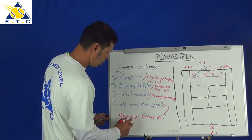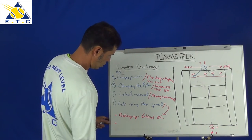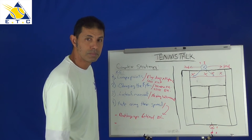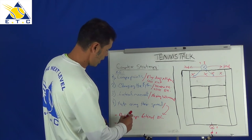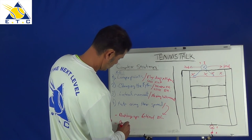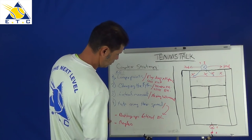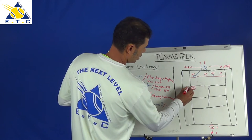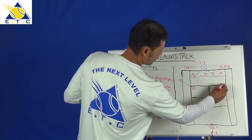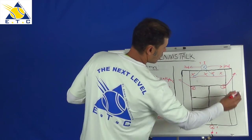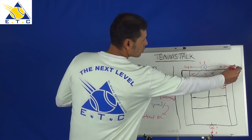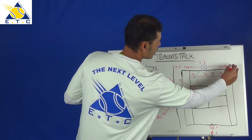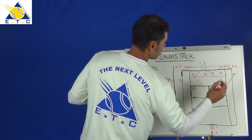What else can I do to take away their speed? How about angles — spreading the court wide by using a couple of angles outside on both sides. That spreads the court and keeps them in zone four most of the time, outside on both wings.